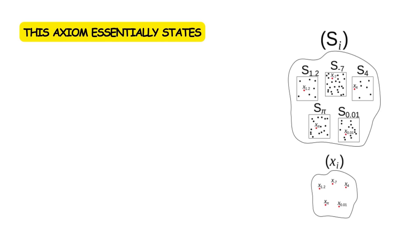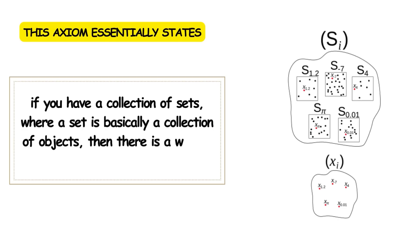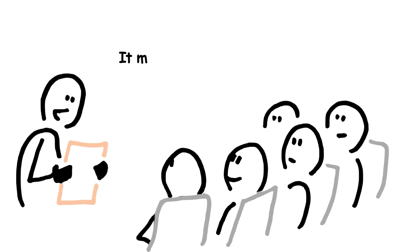This axiom essentially states that if you have a collection of sets, where a set is basically a collection of objects, then there is a way to select one element from each set. This fact cannot be proven from the other usual axioms, so it must be assumed as its own axiom.